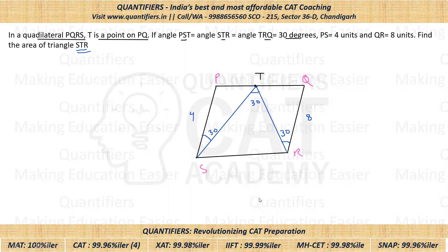We have to find the area of triangle STR. We don't know any of the sides and we know only one of the angles. Since we know angle STR = 30 degrees, if I can figure out ST and TR, I can find the answer. Area of triangle = half into the product of any two sides into sine of the angle between them — so that's half × ST × TR × sin(30).